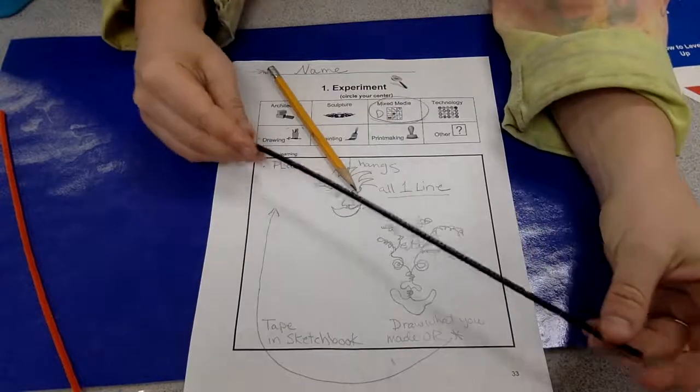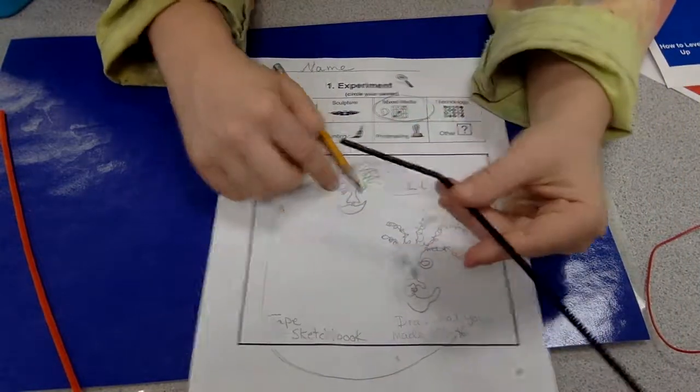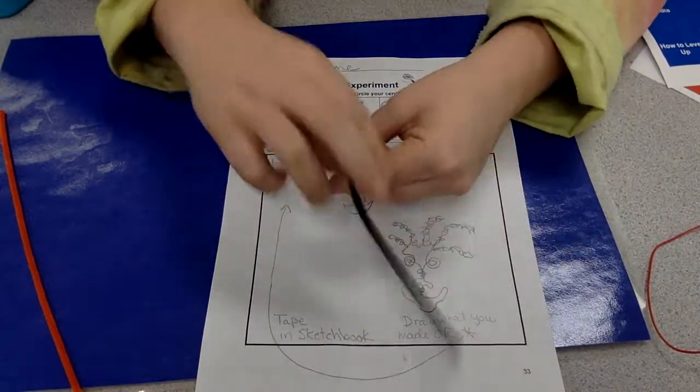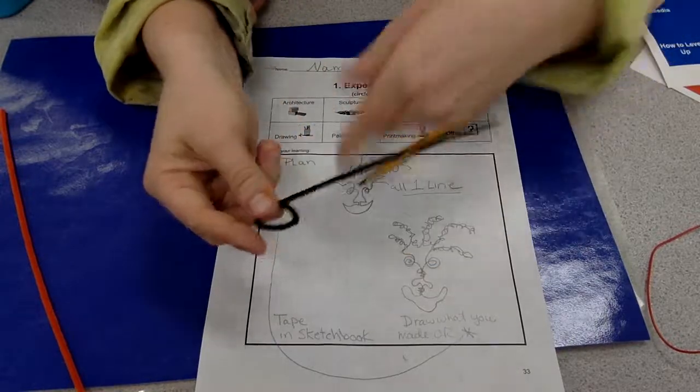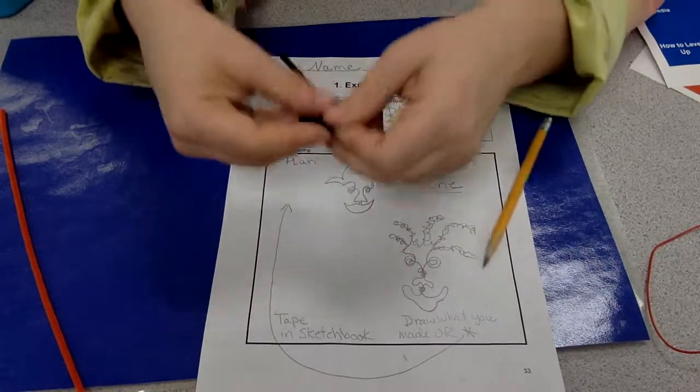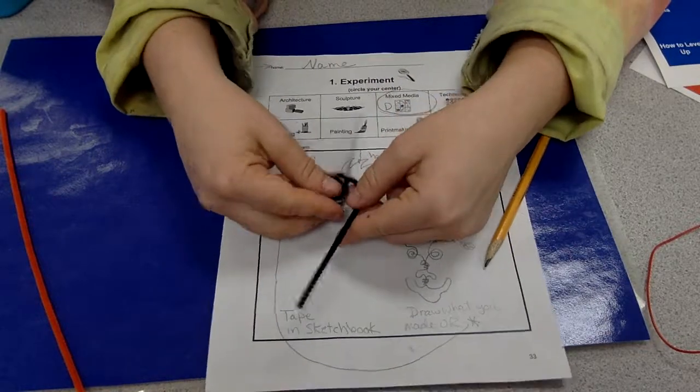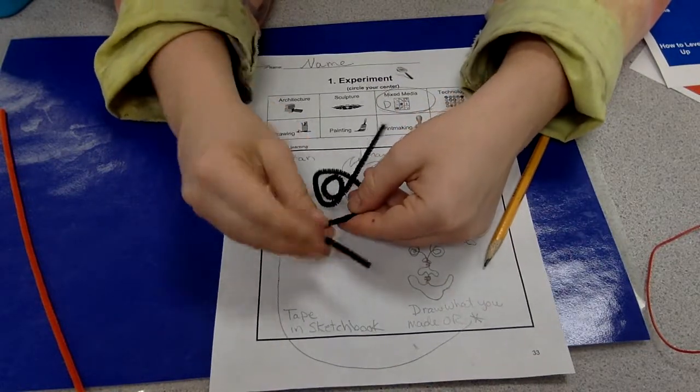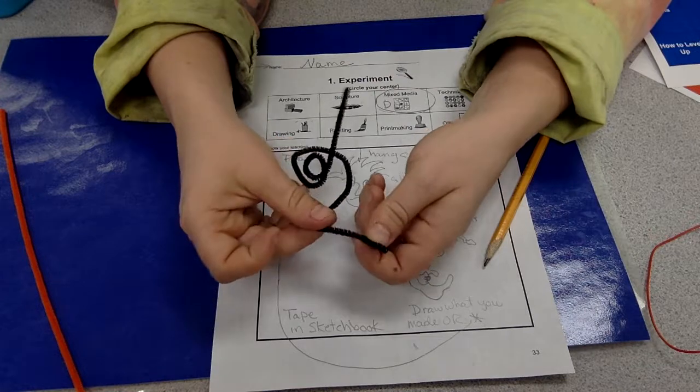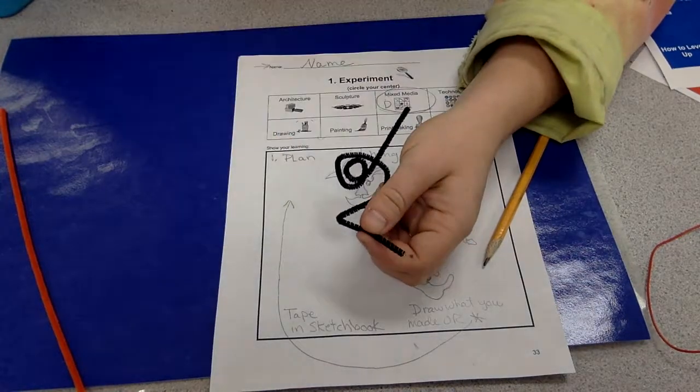What I do is I go ahead and start my plan. So I'm going to start at this eyeball and I just make what I see. So I have that this loops around a couple of times. I have that it comes down. I have my nose here. And then, oh, I'm out of wire.